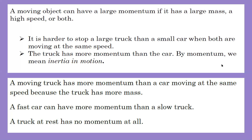A moving truck has more momentum than a car moving at the same speed because the truck has more mass. However, a fast car can have more momentum than a slow truck, just as we saw in the sledgehammer example. A truck at rest has no momentum — that is why momentum is a characteristic of moving objects only.